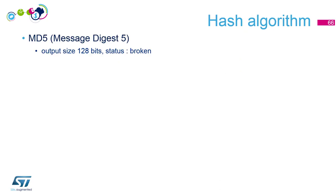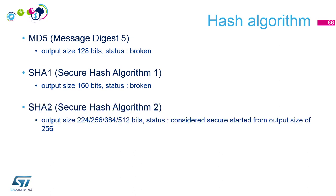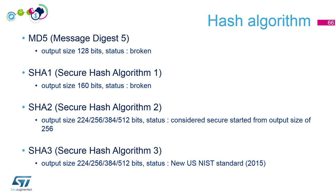The main hash algorithms: MD5 (Message Digest 5) — its status is broken. SHA-1 with an output size of 160 bits is also broken. SHA-2, starting from 256 bits output, is considered secure. SHA-3 also exists with different output sizes and is okay. These algorithms have ideal properties but sometimes hackers manage to find weaknesses.